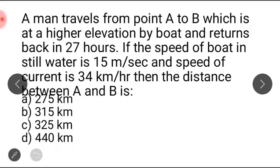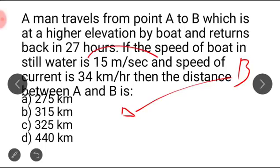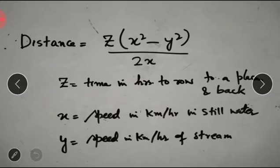A man travels from point A to B which is at a higher place — that means it is upstream. The speed of the boat in still water is 15 meters per second and the speed of the current is 34 kilometers per hour. Since the units are different, we need to convert. For this we use the formula: distance equals z times (x² minus y²) divided by 2x.